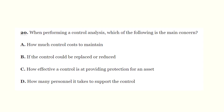Question 20: When performing a control analysis, which of the following is the main concern? The correct answer is C - how effective a control is at providing protection for an asset.